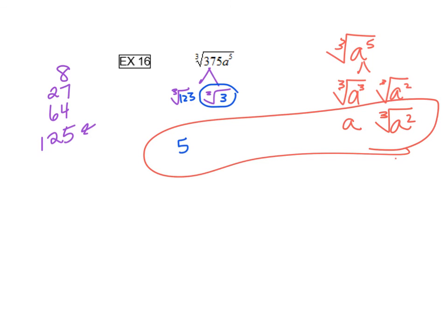So how do we put all this together? Anything outside of the radical stays outside the radical, so the 5 and the a. And then that cube root of 3 and cube root of a squared combine inside the radical. So our final answer is 5a times the cube root of 3a squared.